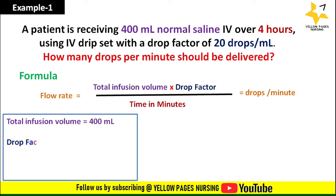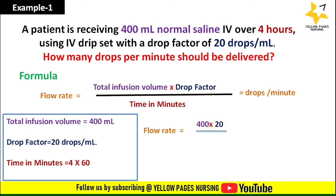Volume is 400 ml, drop factor is 20 drops per ml, and time in minutes is 4 × 60 = 240 minutes (converting hours to minutes). Applying the formula: (400 × 20) ÷ (4 × 60) = 33.3, which we round to 33 drops per minute. This is the flow rate.